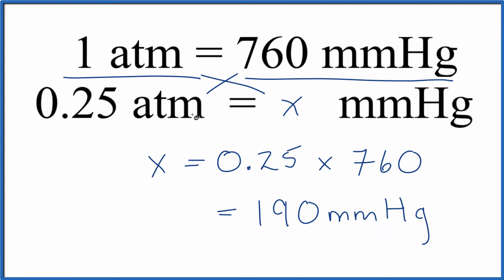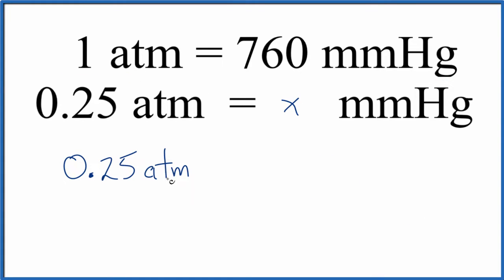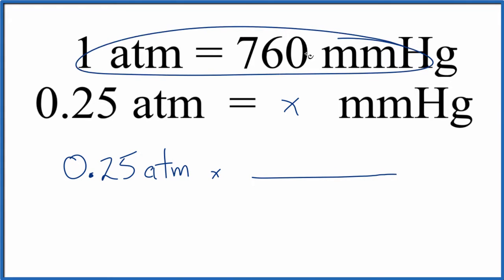Here's the second way, and this is probably how your teachers would like you to do it. We take our 0.25 atmospheres. We're going to multiply it by a conversion factor. And our conversion factor, we get that from this right here.